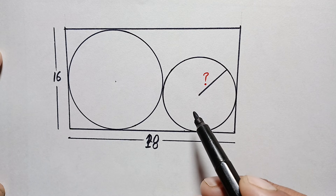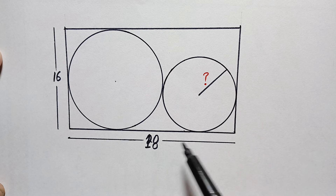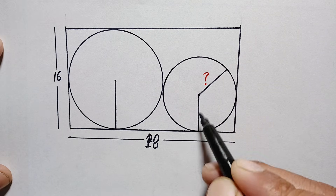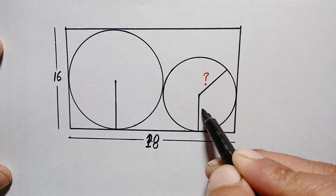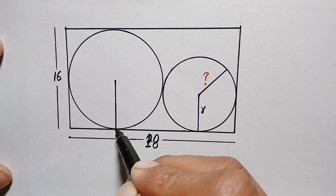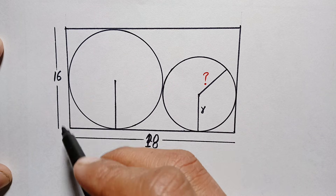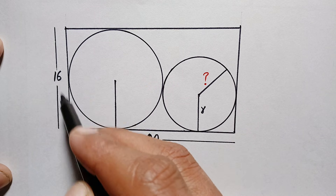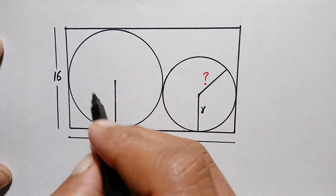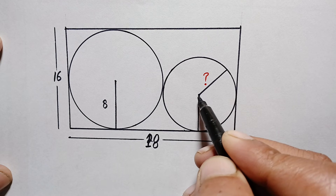To find the radius of the smaller circle, we will connect the centers of these two circles to the lower point of tangencies. Let us suppose the radius of the smaller circle is small r. Now look at the diameter of the bigger circle — it is parallel to this side of the rectangle. This length is 18 units, so the radius of the bigger circle is half of the diameter, which is 8 units.